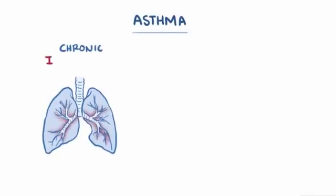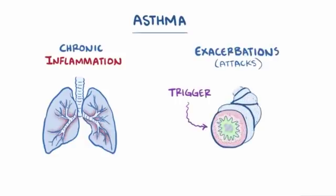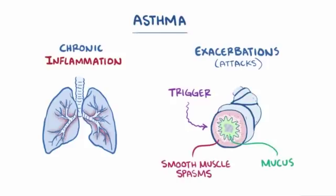Alright, as a quick recap, asthma is characterized by chronic inflammation in the lungs as well as asthma exacerbations or attacks, where certain triggers start up more inflammation which leads to smooth muscle spasms and mucus production, both of which make it hard to breathe.